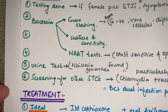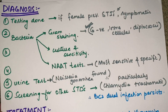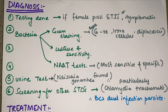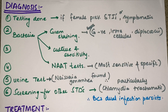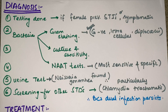Now, how will we diagnose a patient of gonorrhea? Testing will be done in all females who are previously infected by sexually transmitted infections or who are symptomatic. Since the causative organism is a gram-negative bacteria, gram staining is performed — gram-negative intracellular diplococci are seen. The second test is culture and sensitivity to isolate the bacteria from vaginal discharge and lesions.